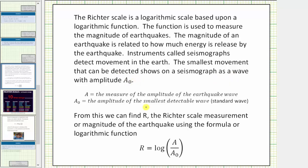So for the Richter scale function or formula, A equals the measure of the amplitude of the earthquake wave and A₀ equals the amplitude of the smallest detectable wave called the standard wave. From this we can find R, the Richter scale measurement or magnitude of the earthquake using the formula or log function R equals log of A divided by A₀.